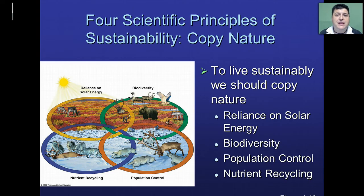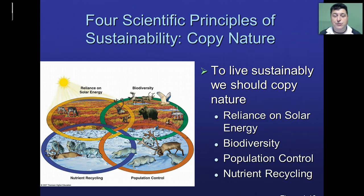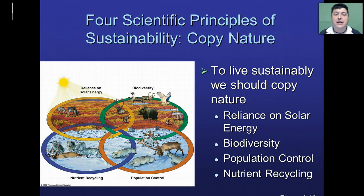The first principle is reliance on solar energy. Nature uses the abundant, perpetual energy source of the sun. The sun produces no residual pollution and it's an endless source of energy. If we can find more ways to use solar energy — actively in the production of electricity or hydrogen, or passively for the heating and cooling of our homes — we could live more sustainably.